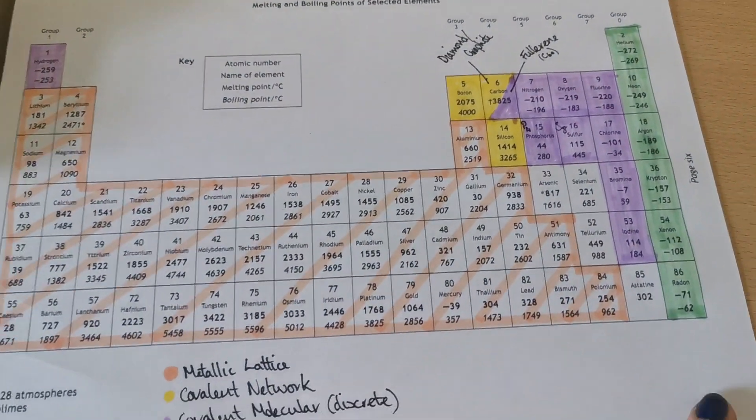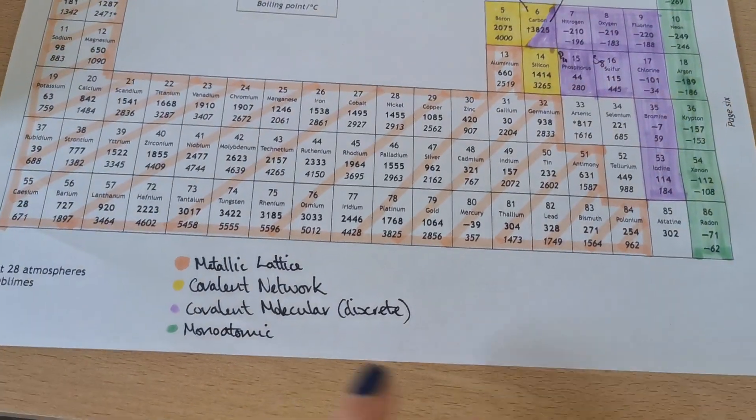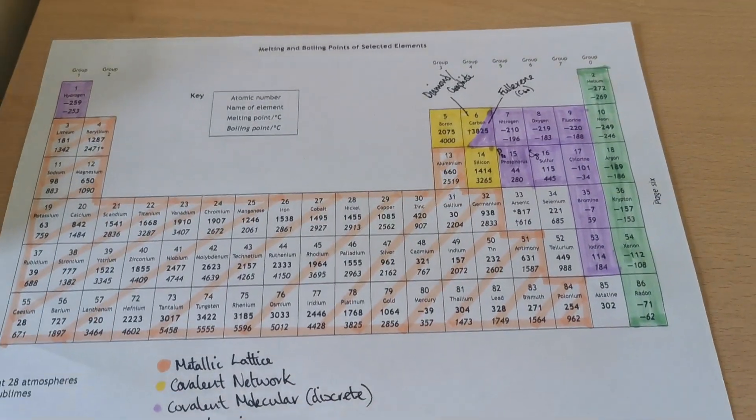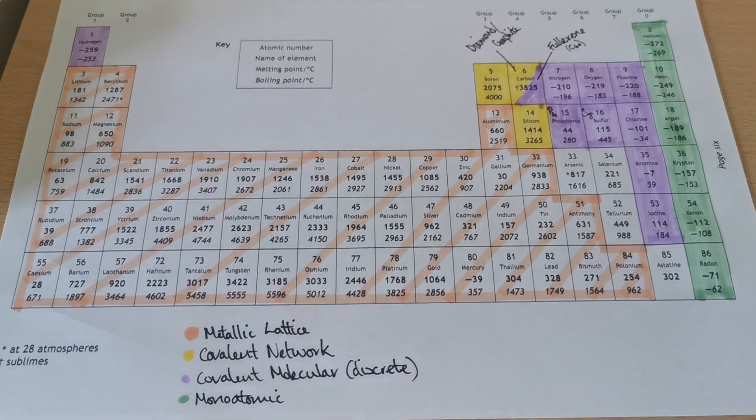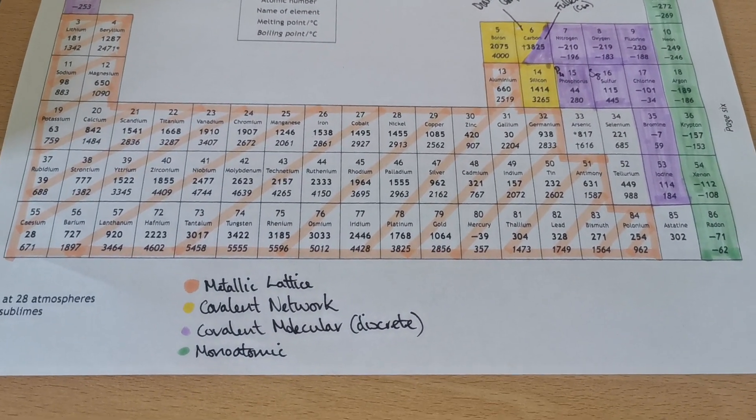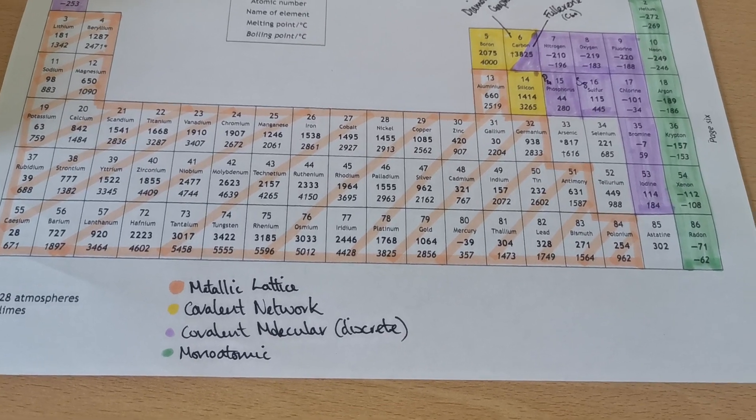That's me coloured in the group zero elements. Like I said, they're monoatomic in structure. That just means single atom. So if you think you might forget what monoatomic means, then I would maybe write that next to the monoatomic word there.